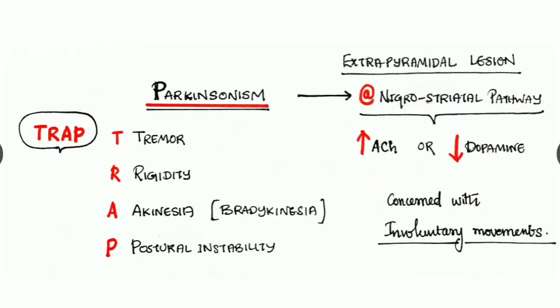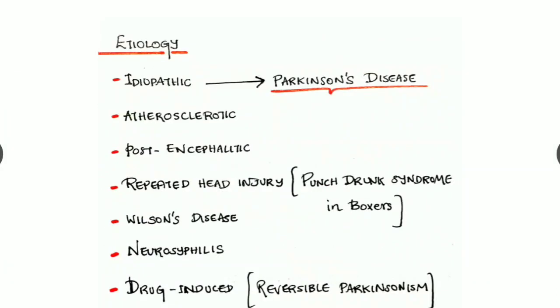Coming to the Parkinsonism features, remember this term: TRAP - T for Tremor, R for Rigidity, A for Akinesia and Bradykinesia, P for Postural instability. Akinesia means loss of power of voluntary movement, whereas Bradykinesia means there is slowed down movement. As a whole, there is difficulty in initiation of a voluntary movement. Let's see the etiology.